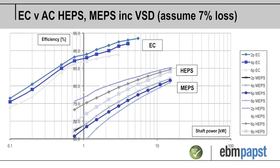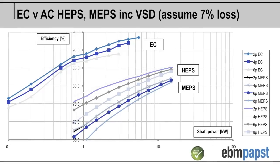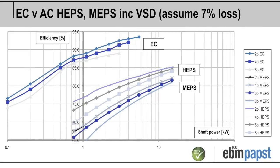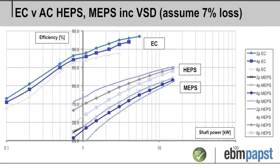Here you can see that the EC motor alone is between 15 and 20% more efficient than a standard MEPS motor with a VSD.